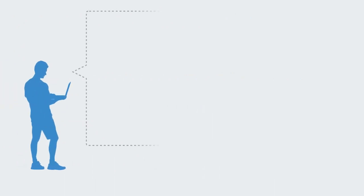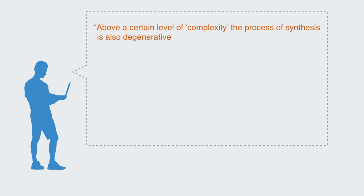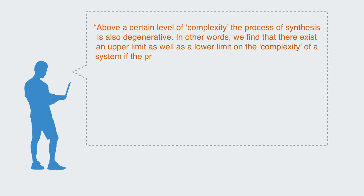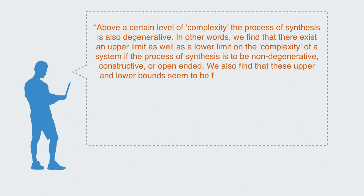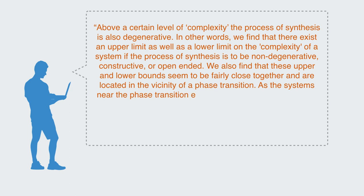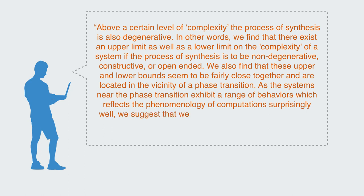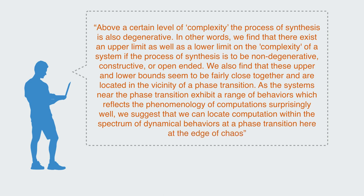In the paper Langton published on the topic, he wrote: Above a certain level of complexity, the process of synthesis is also degenerative. In other words, we find that there exist an upper limit as well as a lower limit on the complexity of a system if the process of synthesis is to be non-degenerative, constructive, or open-ended. We also find that these upper and lower bounds seem to be fairly close together and are located in the vicinity of a phase transition. We suggest that we can locate computation within the spectrum of dynamical behaviors at a phase transition, here at the edge of chaos.